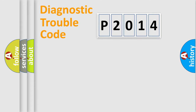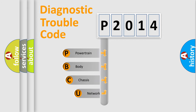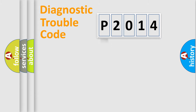Let's look at the history of diagnostic fault code composition according to the OBD2 protocol, which is unified for all automakers since 2000. We divide the electric system of an automobile into four basic units: Powertrain, Body, Chassis, and Network.